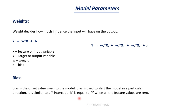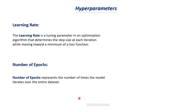Weight and bias are our model parameters. Learning rate is a tuning parameter in an optimization algorithm — in this case gradient descent — and it determines the step size at each iteration while moving toward the minimum of a loss function. Step size means how much change we give to our parameter value at each iteration. Number of epochs represents how many times the model iterates over the entire dataset.